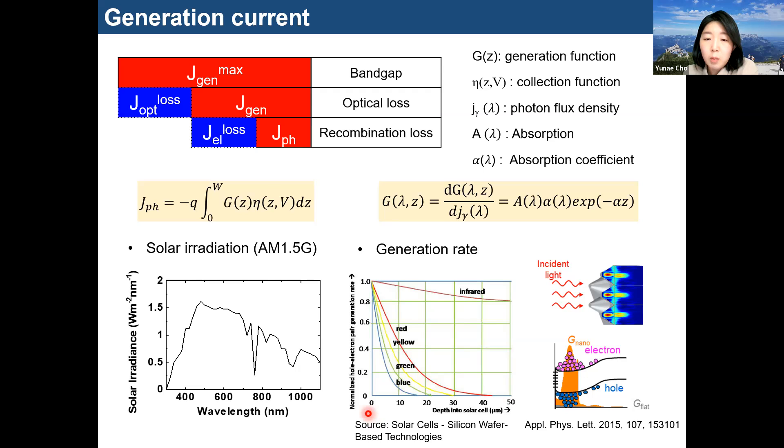In case of the silicon solar cell, data shows that there is an exponential decrease in the depth direction. If you look closer, you can see the longer wavelengths like the infrared, the deeper it goes.